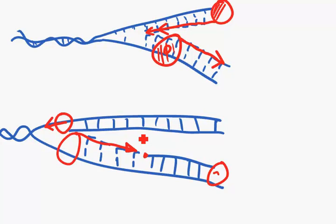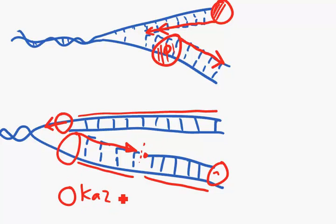So as we go along, this strand is going to be made in one piece. This strand is going to be made in many short pieces because there is a gap here. And these short pieces that we make are called Okazaki fragments.